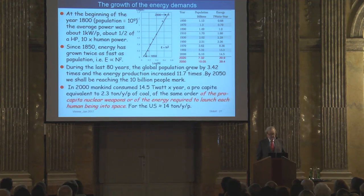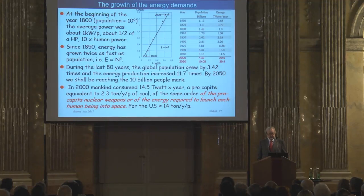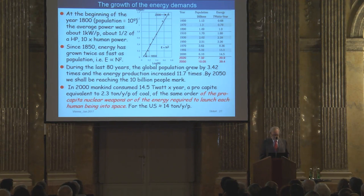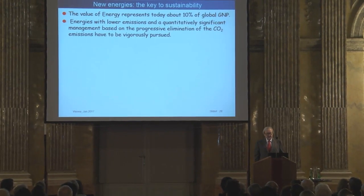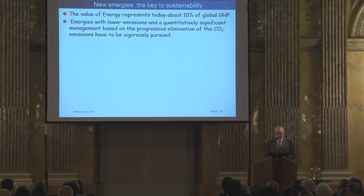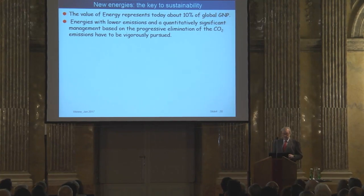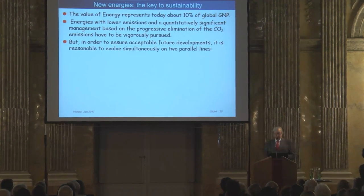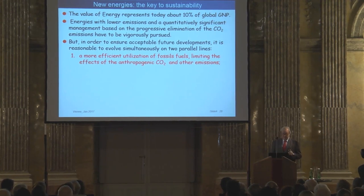In 2000, mankind consumed 14.5 terawatts a year, a per capita equivalent of 2.3 tons of oil per year per person — the same order as the per capita nuclear weapons energy: every year we produce enough energy corresponding to all the nuclear weapons together, or enough to launch every human being into space. The US uses 14 tons per year per person. The value of energy represents today 10% of the global GNP. In order to ensure acceptable future development, it is reasonable to evolve simultaneously on two parallel lines: more efficient utilization of fossil fuel limiting anthropogenic CO2, and the development and progressive utilization of renewable energy sources like wind and solar.